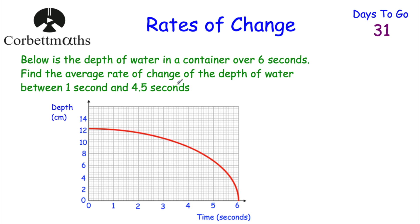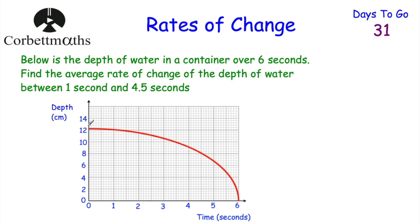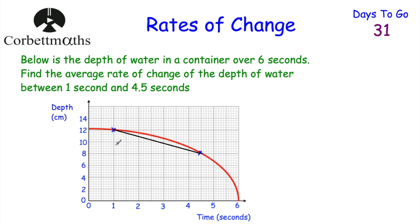Let's have a look at our next question. This is the same graph as question one — the depth of water in a container over 6 seconds. We've been asked to find the average rate of change of the depth of water between 1 second and 4.5 seconds. To do this, we plot the points at 1 second and 4.5 seconds, then join them up with a chord. We just need to work out the gradient of that chord.